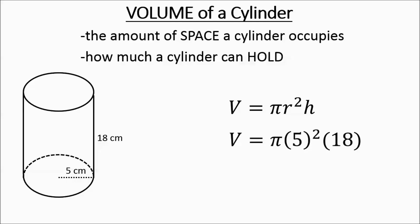When you're typing this in your calculator, make sure you do the 5 to the second power first. You'll type in 5 times 5 times 3.14 times 18, and you get 1,413 centimeters cubed. And there you go. Pretty easy. You just got to type in and multiply.